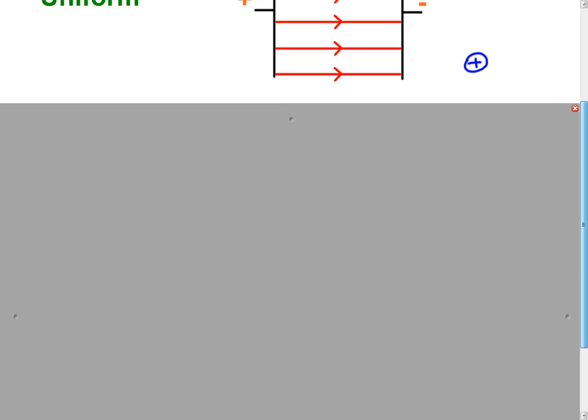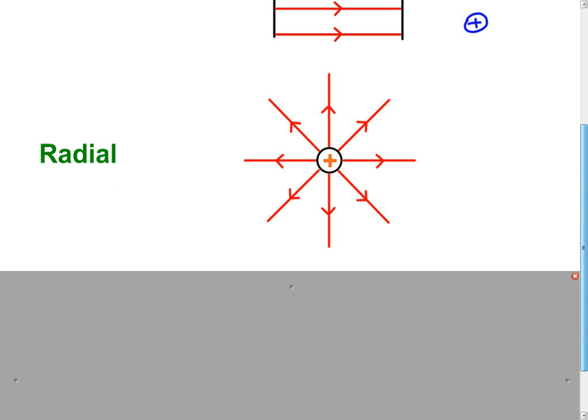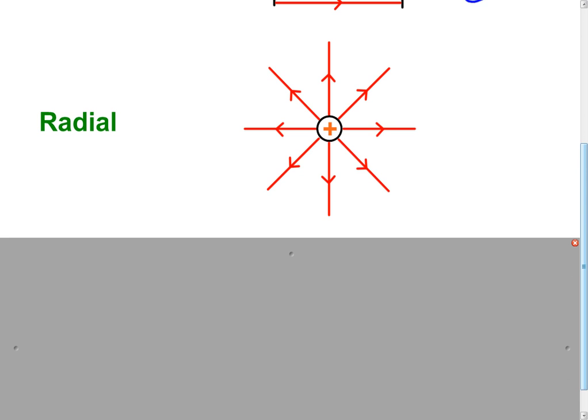The other type of field we've seen already is a radial field. Now, in this case, we've got the field around a positively charged sphere. Now, this looks really similar to the gravitational field around a sphere like the Earth, which is roughly spherical, except that the arrows are pointing the other direction. That's because this is positive.